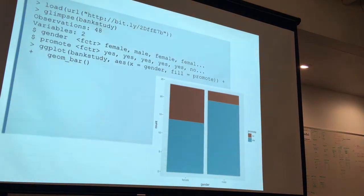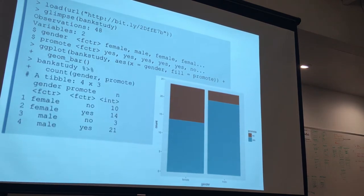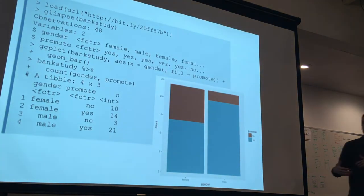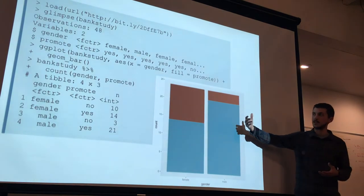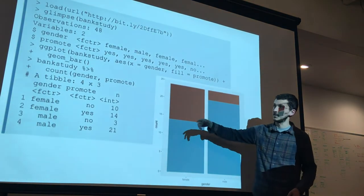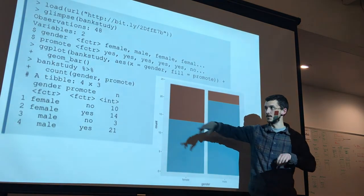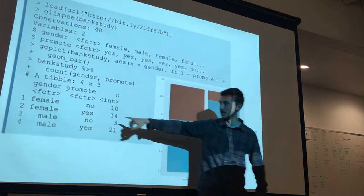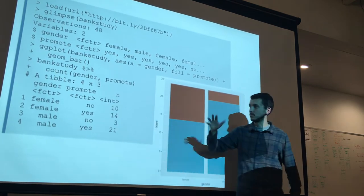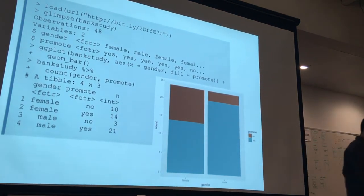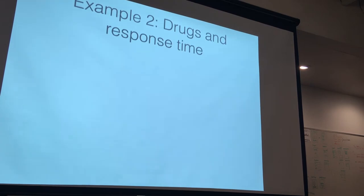To put some numbers on that, we can compute the two promotion proportions, or we can cross-tabulate. If you're used to base R, this is where you'd use the table function. Using tidy syntax, you can count observations in each subcategory of gender cross promote. With males, almost all got promoted, versus females where just a little more than half did.